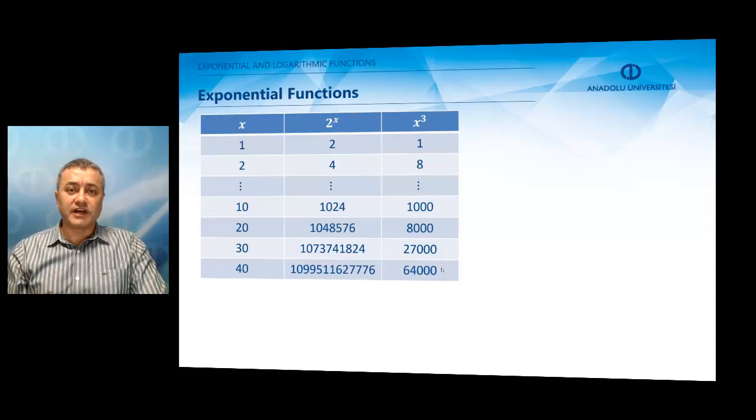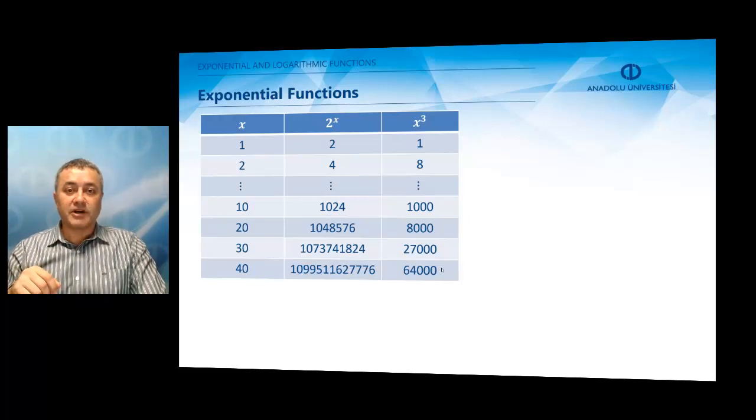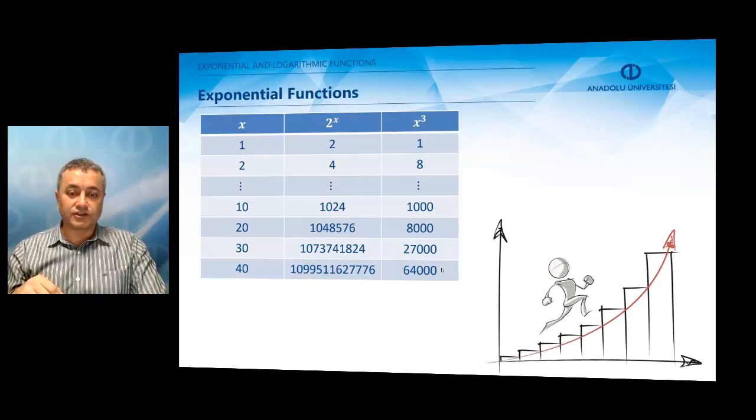Exponential functions are very fast-growing functions. When compared to polynomials, they grow extremely fast. For this reason, let us compare the functions 2^x and x³. As can be seen from this table, even when x is not very large, the exponential function is already much bigger than the polynomial function. Exponential functions grow very rapidly.